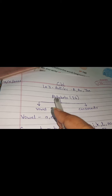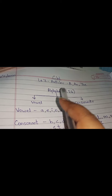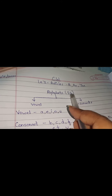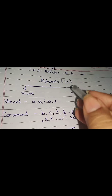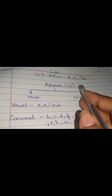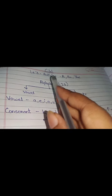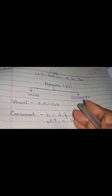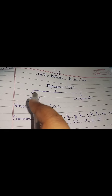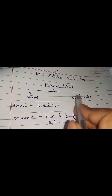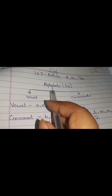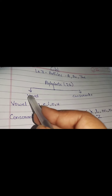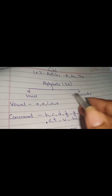First, we know that the English language has alphabets. How many alphabets? There are 26 alphabets — 26 letters. Those alphabets are divided into vowels and consonants.